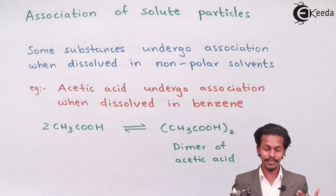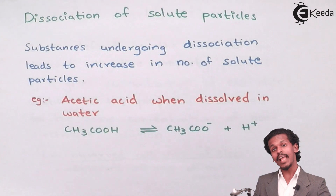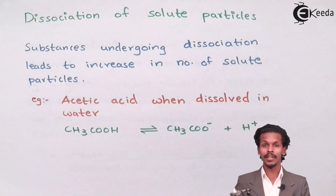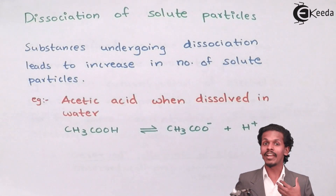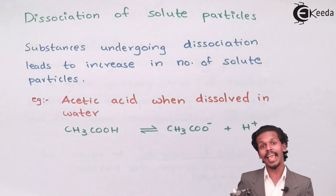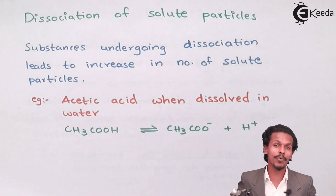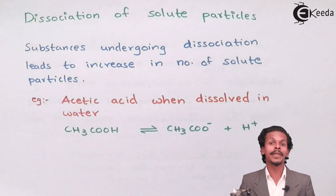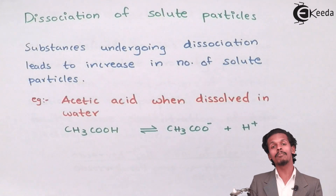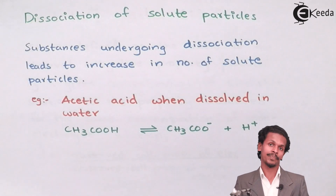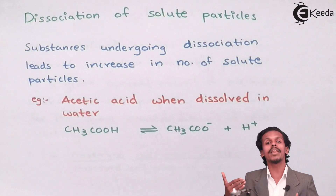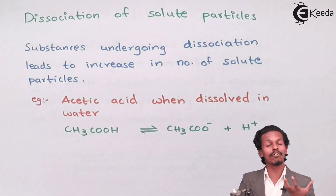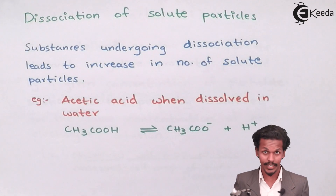Now, what will happen if the solute undergoes dissociation? If any solute undergoes dissociation, then the number of particles will increase. As we have mentioned many times, colligative property depends on the number of solute particles. So if the number of solute particles increases, obviously the colligative property will also increase. There are molecules which undergo dissociation and produce multiple particles, which would increase the osmotic pressure. This increase would create an error in calculation, and this kind of error is nothing but the abnormality that we get.